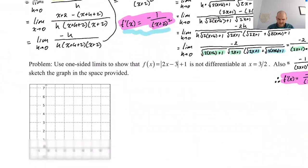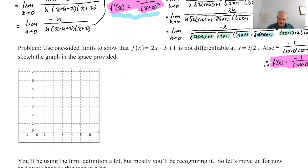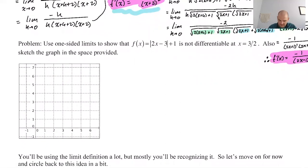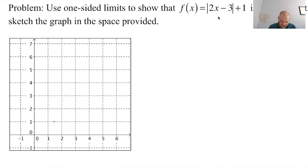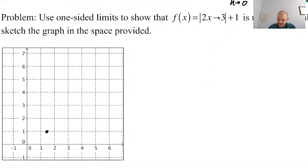Let's take a look at this next problem. It says: use one-sided limits to show that f of x equals the absolute value of 2x minus 3 plus 1 is not differentiable at x equals 3 halves. Also sketch the graph in the space provided. Let's sketch the graph first because it's probably going to be helpful. When x is equal to 3 halves I get 1, so 3 halves is 1.5 and I need to get 1 — I'm going to put a point there. The slope to the left of that is going to be negative 2.